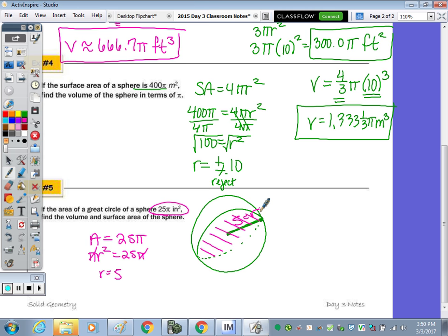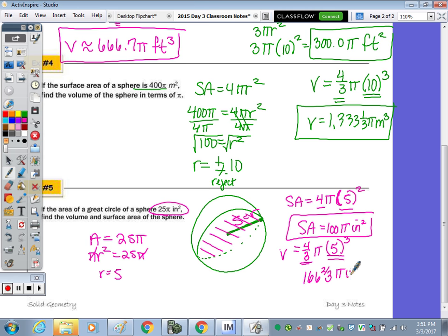So let's do surface area first, because that's a short and easy one. So surface area is 4π times r², so 5² is 25, and then 25 times 4, we have a surface area of 100π square inches. And then volume, volume is 4/3π, radius of 5³. So 5³ is 125, and then 125 times 4/3 is 166 and 2/3π inches cubed.